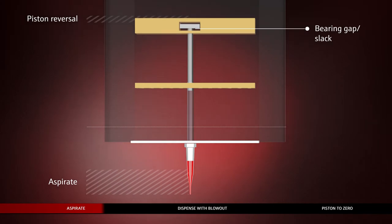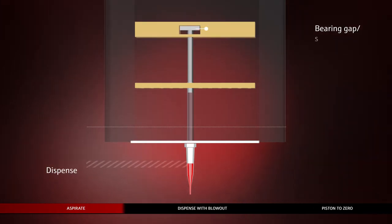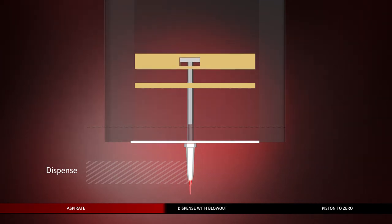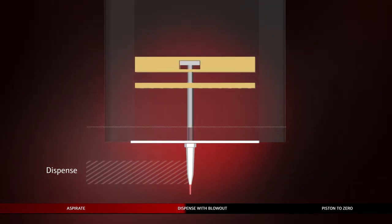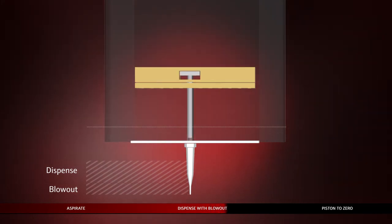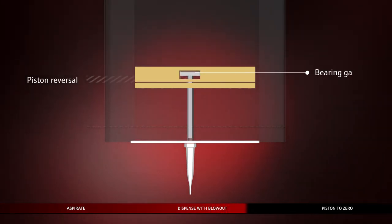During the dispense step, the piston is moved downward. The dispense with blowout is performed into the target well to drain the tips completely and to guarantee the aspirated volume.